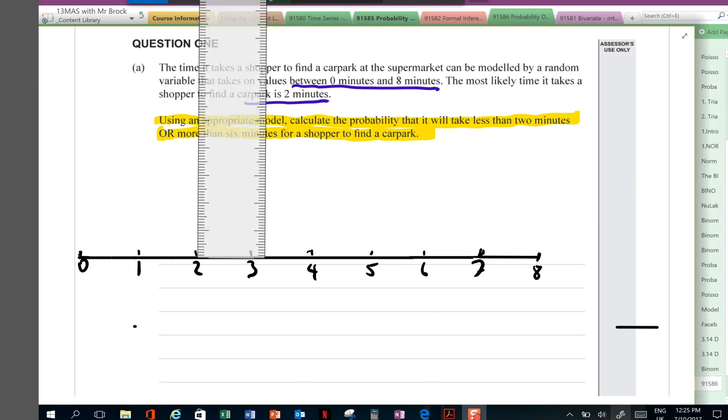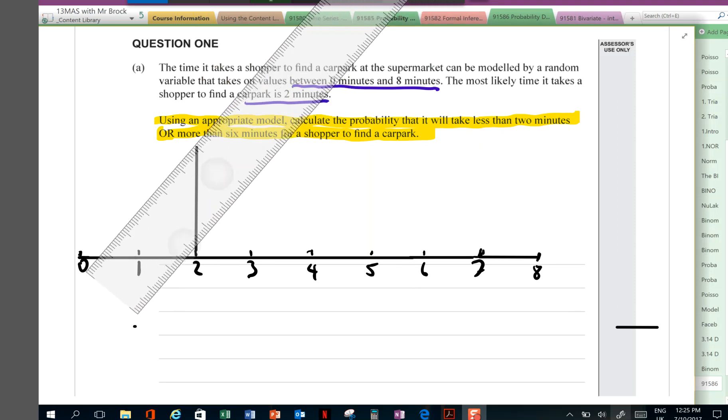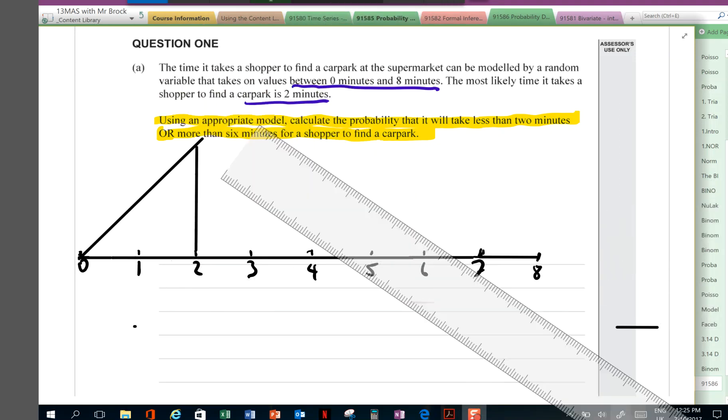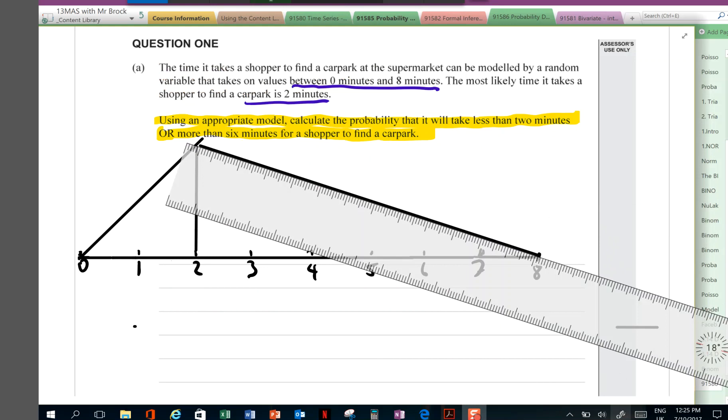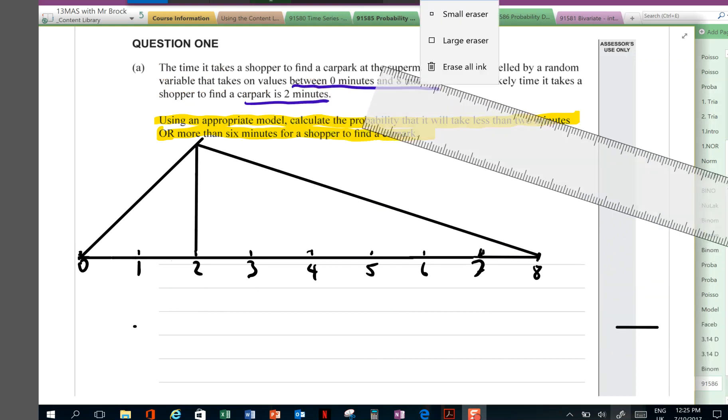Just easier to visualize. So, if I go up one, two, three, four, like that, and that's my mode. And then I'm just going to join up the minimum. Like so.